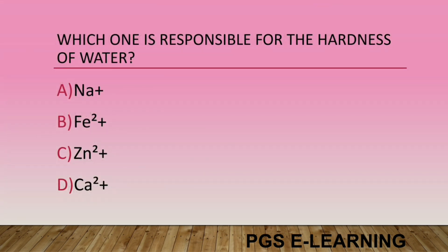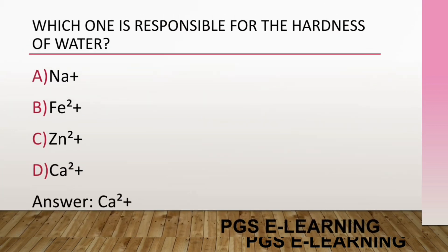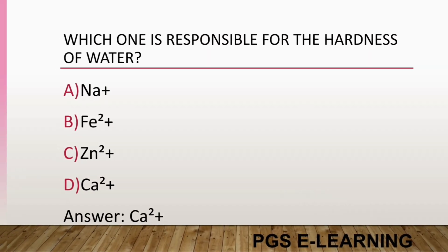Which ion is responsible for the hardness of water? Option A, Na⁺. Option B, Fe²⁻. Option C, Zn²⁺. Option D, Ca²⁺. Correct answer is Ca²⁺.